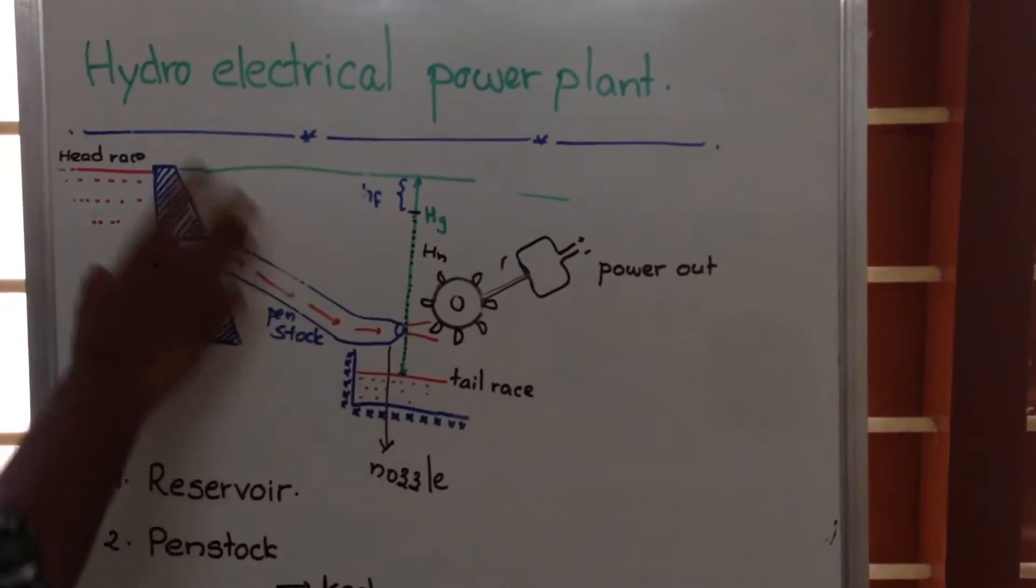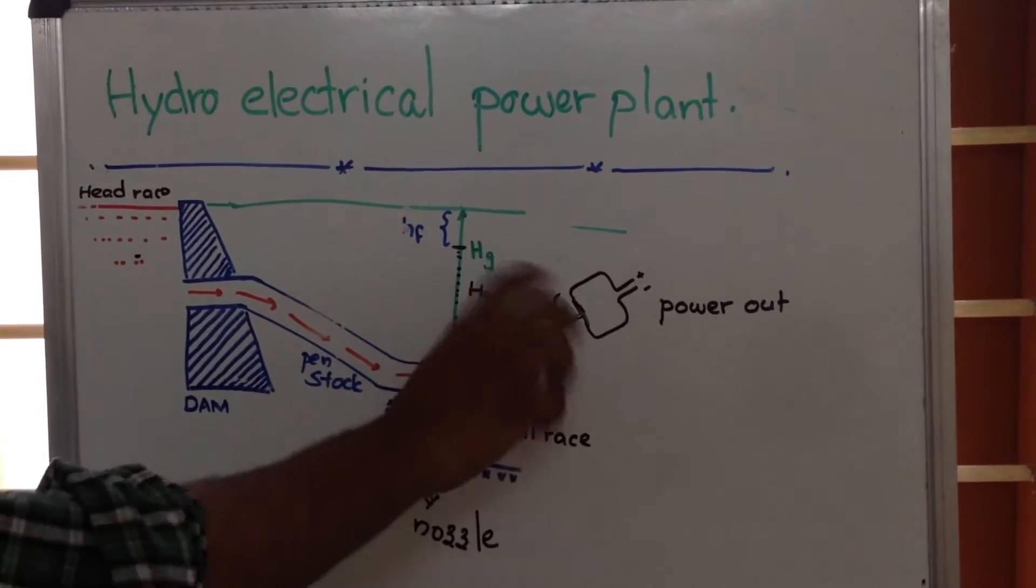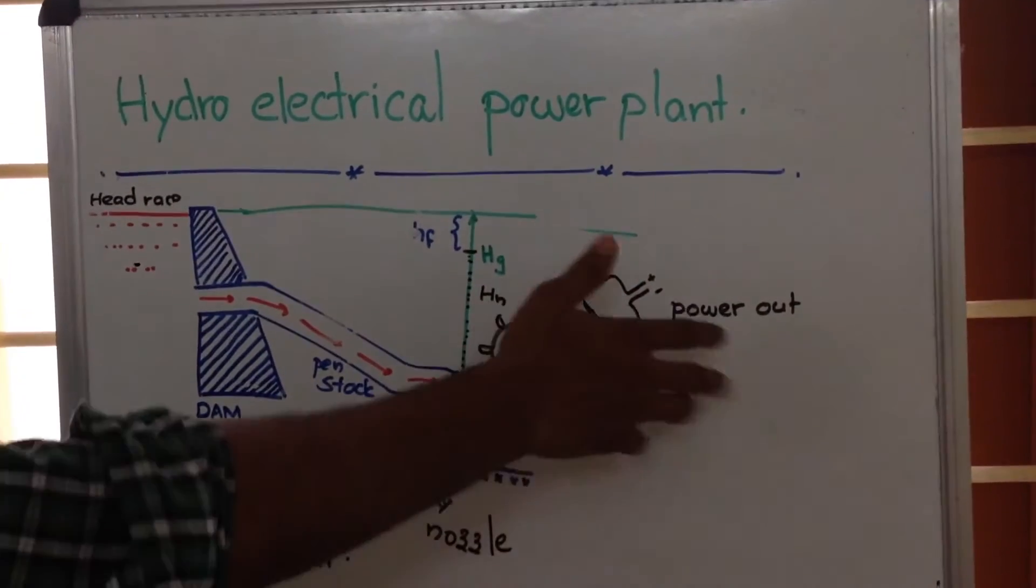The main components are a reservoir, a large diameter pipe called penstock, a turbine, and an electric generator connected to the turbine.